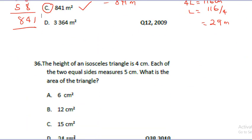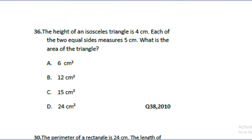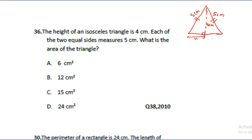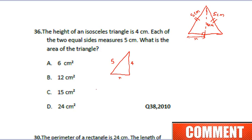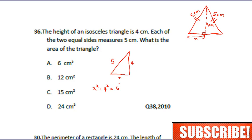Sometimes questions are not direct, so you have to work around them. The next question involves an isosceles triangle. Remember, the two equal sides of an isosceles triangle are the same. The base is 4 cm and each of the equal sides measures 5 cm. We need to find the height, which meets the base at 90 degrees, so we label it x and apply Pythagoras' theorem.